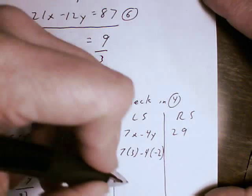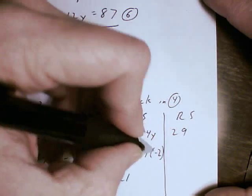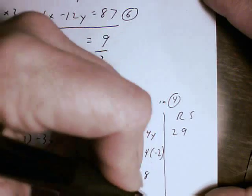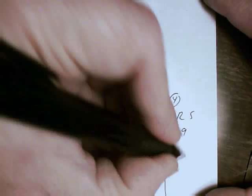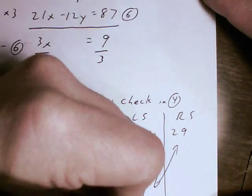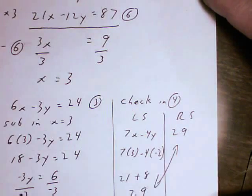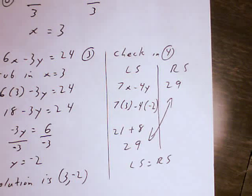7 times 3 is 21. Negative 4 times negative 2 is plus 8. When I add them, I get a 29. Left side equals right side. This is the correct solution to the system.